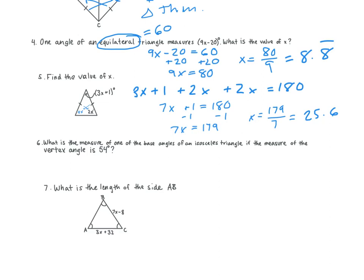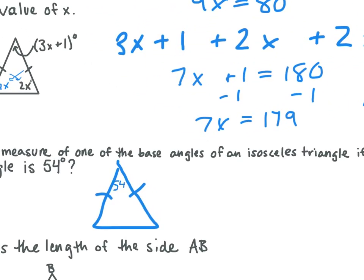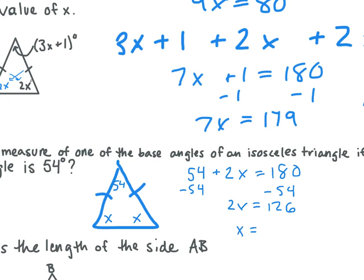Number six. What is the measure of one of the base angles of an isosceles triangle if the measure of the vertex angle is 54 degrees? The vertex angle is in between the two congruent sides — so the top one. If our top angle is 54 and the base angle to the left is X, our third angle is also X. So 54 plus 2X is equal to 180. We subtract 54, get 2X is equal to 126, and X is equal to 63.